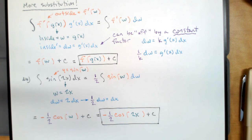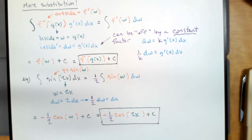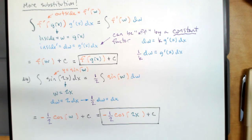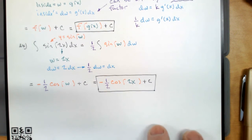Notice that before we begin, after we identify the inside, there are three things: we identify the inside, we identify the dw — that's what makes the substitution work — and then we figure out what the outside function is. This is all based on our choice of what we think the inside function is. The dw is what tells us the substitution will work. Then we figure out what the outside function is so we know what we're actually integrating — for example, we're integrating sine, so there'll be a negative cosine at some point.